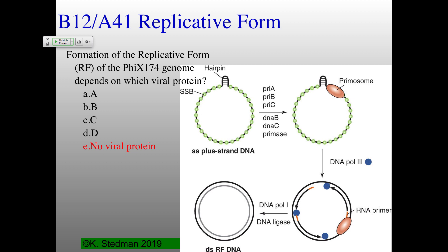The replicative form is what you need in order to make more single strands and also to make any kind of messenger RNA. How you make the replicative form involves all cellular proteins: PRA A, PRA B, PRA C — all parts of the primosome — DNA B and DNA C, which are cellular replication initiation proteins, and then the DNA primase. No viral proteins are required here. The RF DNA is all made by cellular proteins.